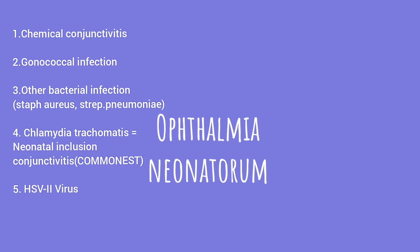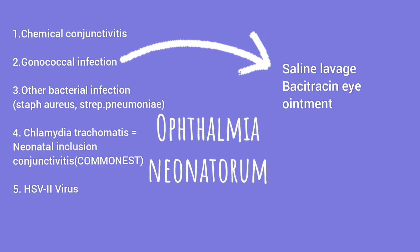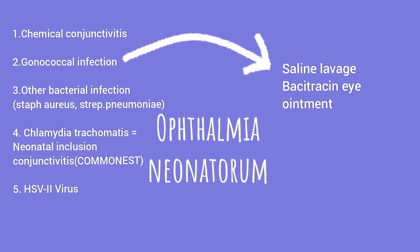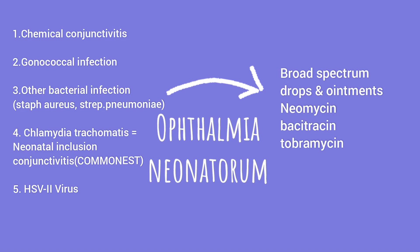Herpes simplex may involve the cornea, leading to corneal ulceration or superficial punctate keratitis. Coming to the treatment: chemical Ophthalmia Neonatorum does not require any treatment as it is self-limiting. In gonococcal, there is purulent discharge, so we will do saline lavage hourly until the discharge is eliminated. We will also give bacitracin eye ointment as topical therapy. For systemic therapy, we will give ceftriaxone or cefotaxime by IV. For other bacteria, we may use broad-spectrum drops and ointments.